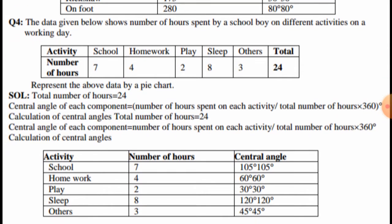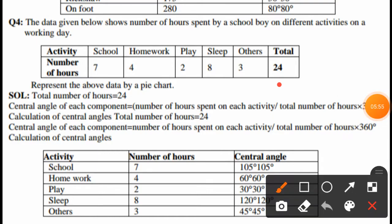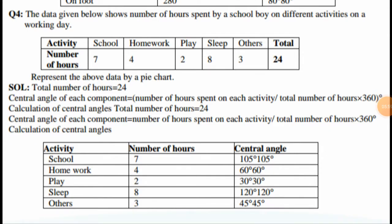In question number 4, data shows the number of hours spent by a school boy on different activities on a working day: school 7 hours, homework 4 hours, play 2 hours, sleep 8 hours, others 3 hours. Total is 24 hours — the full day record.